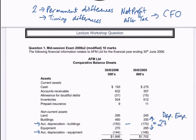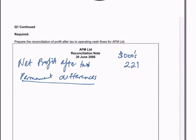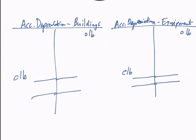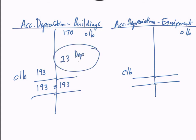For accumulated depreciation on equipment, I can't use the shortcut method because I know there's been a sale — sales result in a write-down of accumulated depreciation. So I need to reconstruct the T-account. From the balance sheet: opening balance 148, closing balance 144. The debit side should equal the credit side of 193, so the missing amount is 23 depreciation expense — which is simply 193 minus 170.